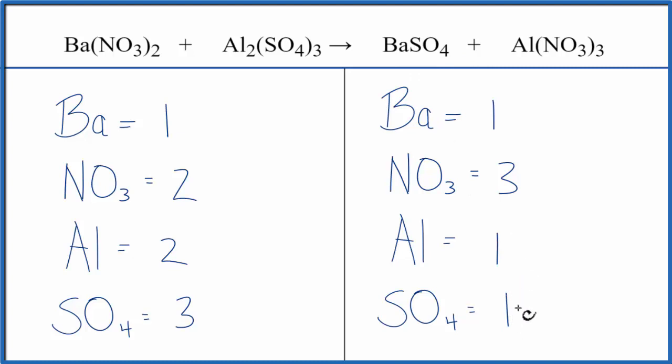Why don't we fix the sulfates first? We could just put a three in front of the barium sulfate. So one times three, that gives us three of the sulfates.